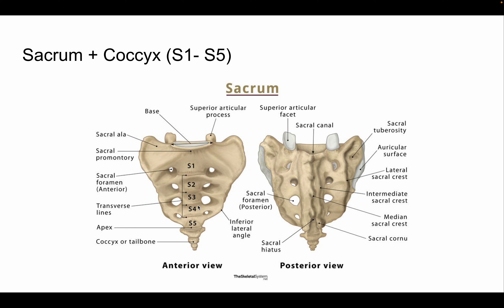Starting from superior to inferior, we have the base of the sacrum, then the superior articulating processes — just like all other vertebrae — which articulate with the L5 vertebra. We have the sacral ala, or wings of the sacrum. The spaces between the fused vertebrae are analogous to intervertebral foramina, but here they are called sacral foramina. We have anterior and posterior sacral foramina — eight total, four on each side.